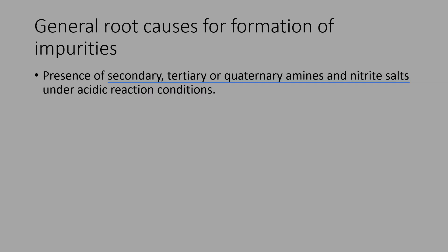Let us see the general root causes for formation of these impurities. The presence of secondary, tertiary, or quaternary amines and nitrate salts under acidic reaction conditions is a key cause. Recent information gathered by the FDA suggests that nitrosamines are formed when compounds having a nitroso group bonded to an amine are used in the synthetic process under acidic conditions. Under these conditions, nitrate salts may form nitrous acid, which can react with amines to form a nitrosamine. Risk of formation is higher if nitrous acid is used for quenching residual azide. Nitrosamines are potent genotoxic agents in several animals and probable carcinogens for humans.